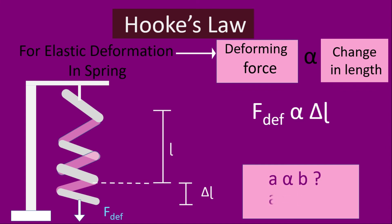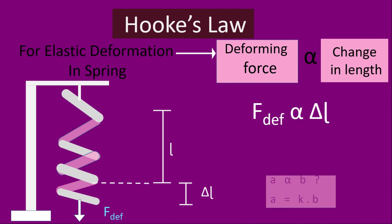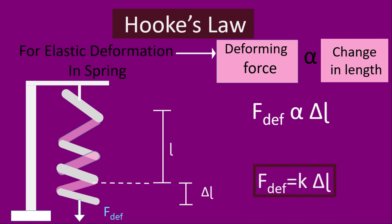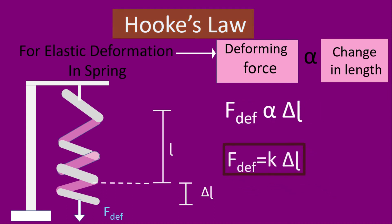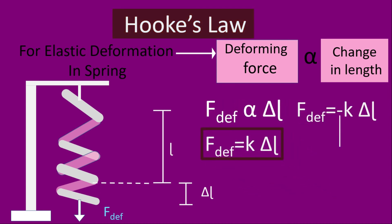If A is directly proportional to B, then A equals some constant K times B. So here, deforming force equals K times delta L. That is Hooke's law. More precisely, the restoring force is F = minus K times delta L, where the negative sign indicates the restoring force is always opposite in direction to the displacement.